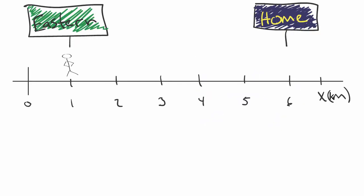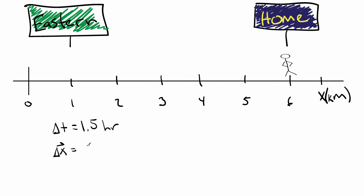Let's say that it took 1.5 hours to walk from eastern to home. Then we can calculate your velocity by dividing your displacement, 5 kilometers in the positive x, by the elapsed time, 1.5 hours. So, your velocity was 3.3 kilometers per hour in the positive x.